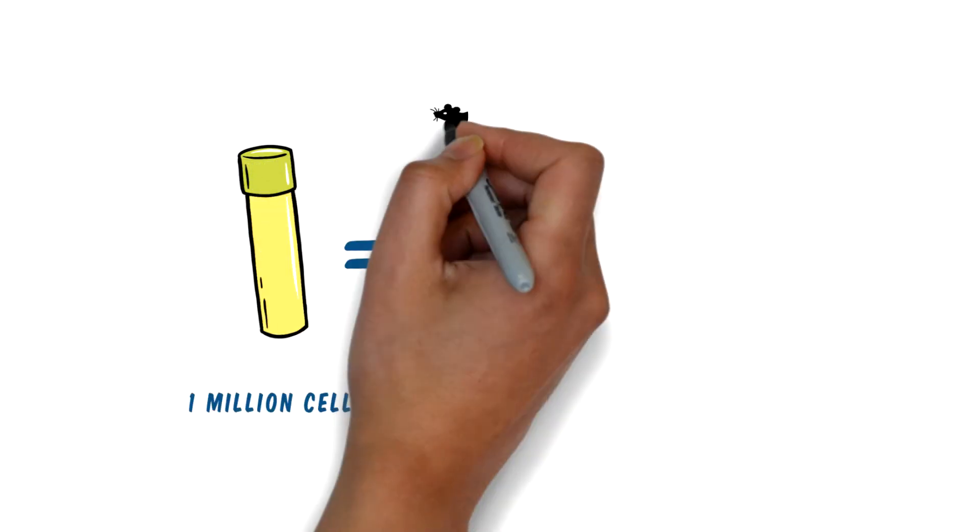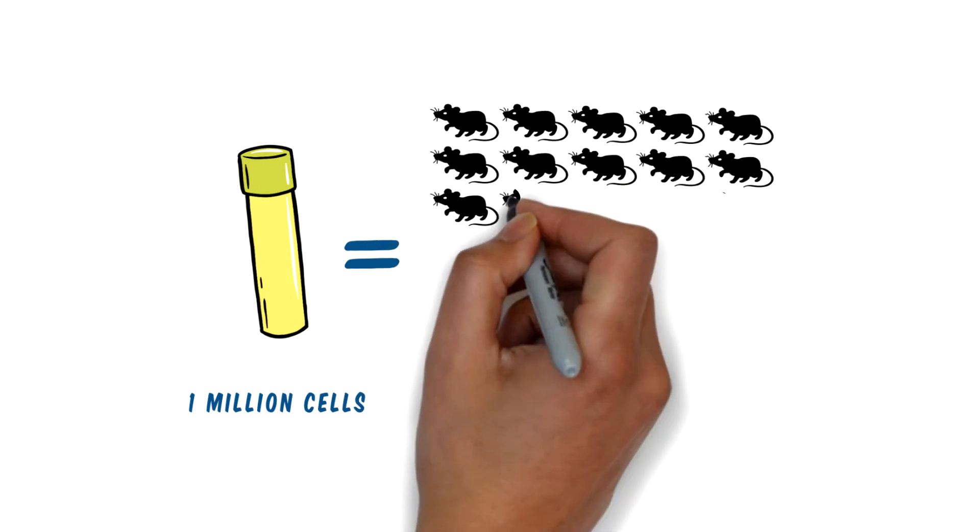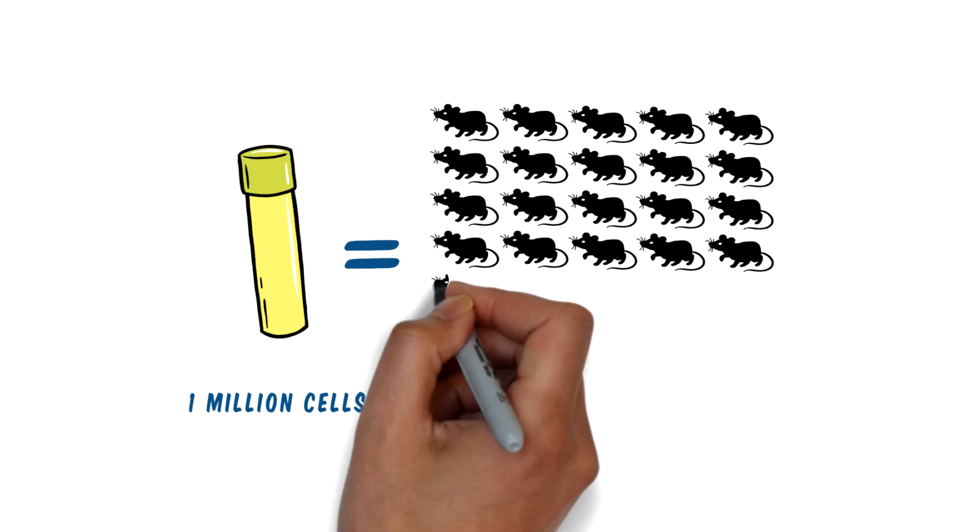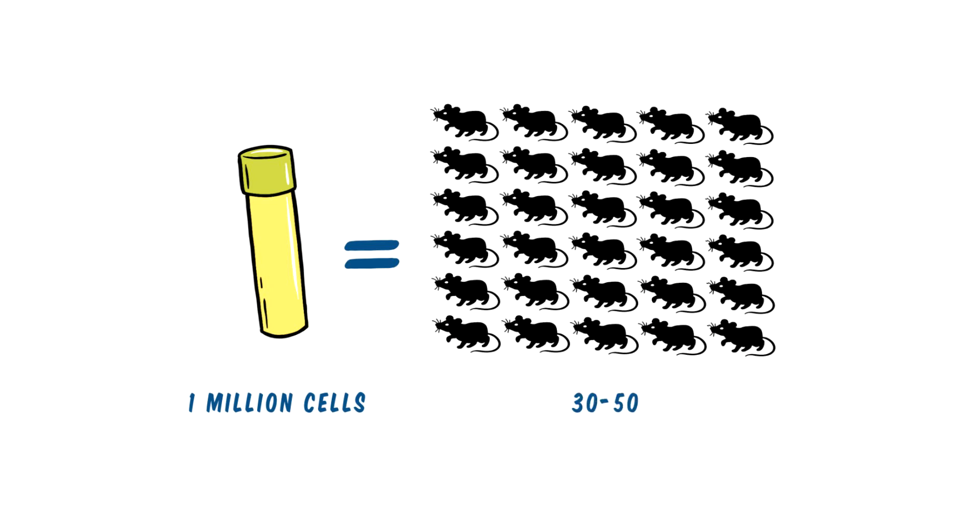No longer does she depend on large numbers of mice. One vial of iCell dopa neurons provides enough cells to produce reliable, translatable data.